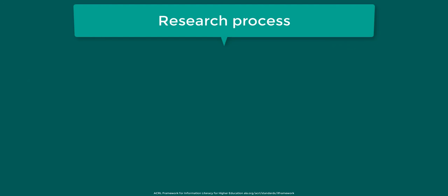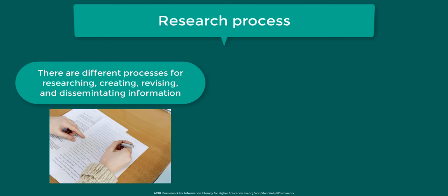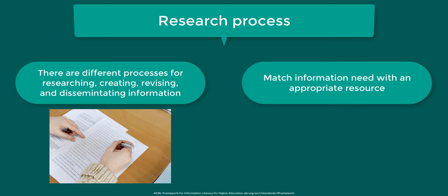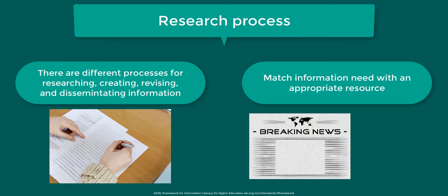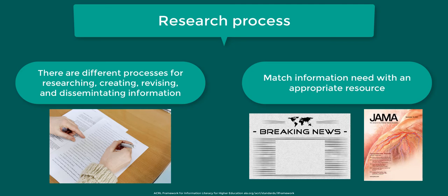The second concept is the process of researching, creating, revising, and disseminating information. One of the goals of this concept is to match an information need with an appropriate resource. If you need information on events that happened yesterday, you might use a newspaper article. If you need a scholarly source for a research paper, you might use a peer-reviewed journal article.